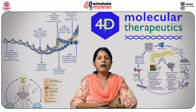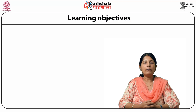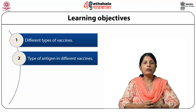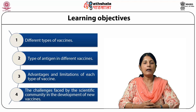Vaccines are biological preparations that trigger immune response to produce antibodies and provide immunity against an infection without exposing an individual to the infection itself. After completing this module you should be able to understand different types of vaccines, what are the different antigens in these vaccines, the advantages and limitations of each type, and the challenges faced by the scientific community during development of new vaccines.